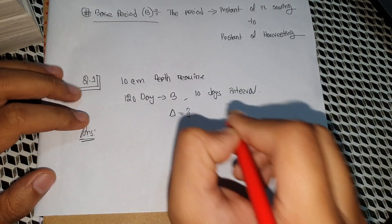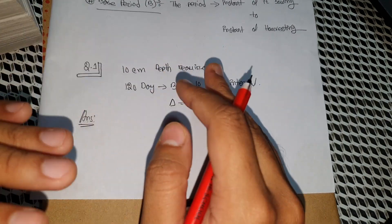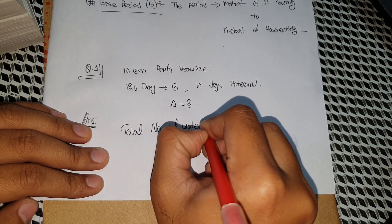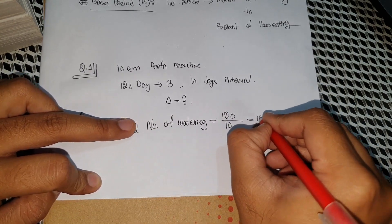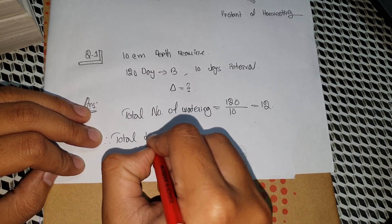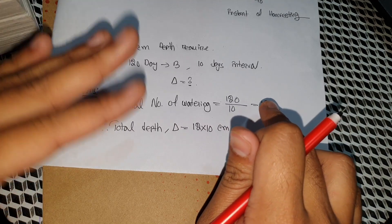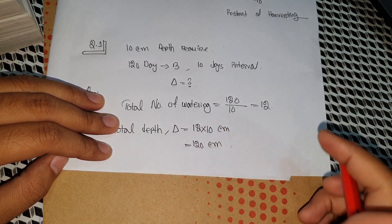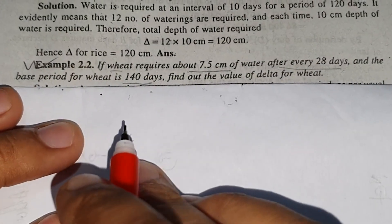Delta is equal to the base period divided by the interval, multiplied by the depth per watering. The base period is 120 days and the interval is 10 days, so the number of waterings is 12. Each time 10 cm depth is required. Delta equals 12 times 10 cm equals 120 centimeter. The final answer is 120 centimeter.